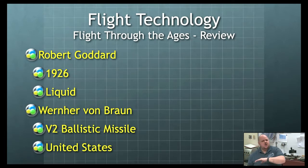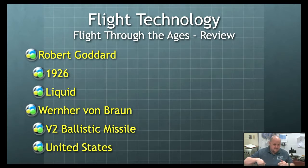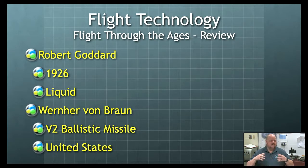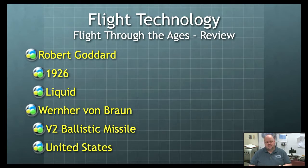The V2 missile went from Germany to London — across the channel — and rained down terror on the European block. Countries in close proximity to Germany were in real trouble, but the V2 ballistic missile couldn't reach us in the States. It's not an intercontinental ballistic missile, but it was the precursor. Von Braun ended up helping the U.S. space program.